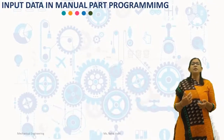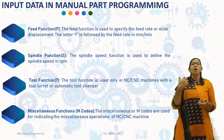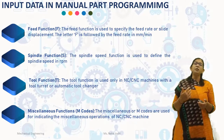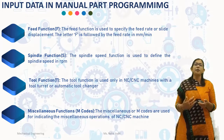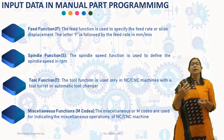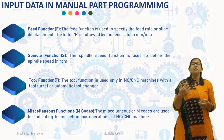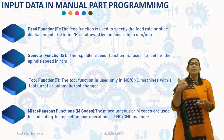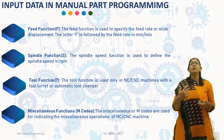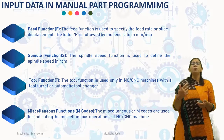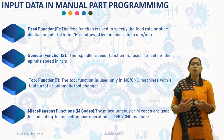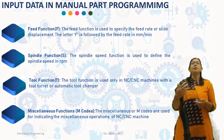Next is feed function. The feed function is used to specify the feed rate or slide displacement. The letter F is followed by the feed rate in mm per minute. For example, F105 indicates that the feed rate is 105 mm per minute. Once the feed rate is programmed in a block, it remains fixed in all subsequent blocks until it is replaced by another feed value.